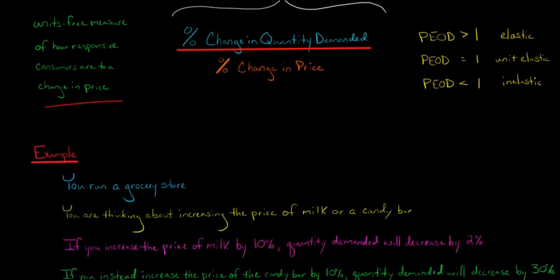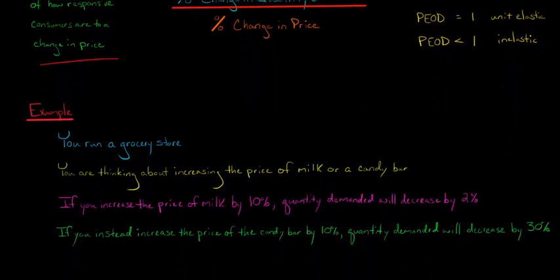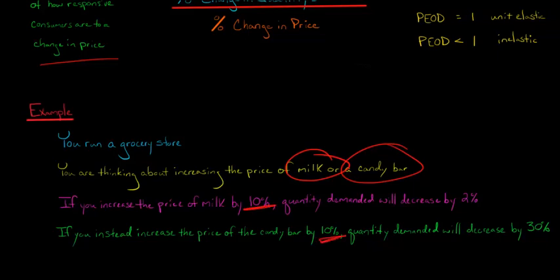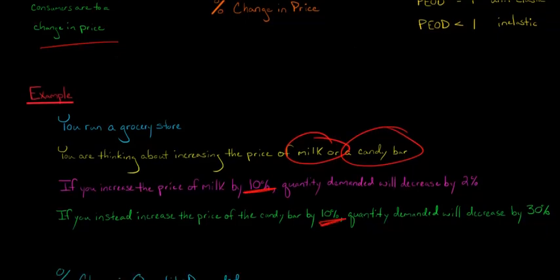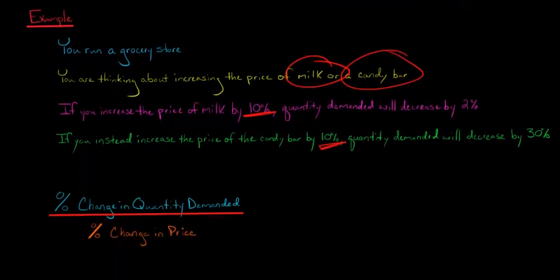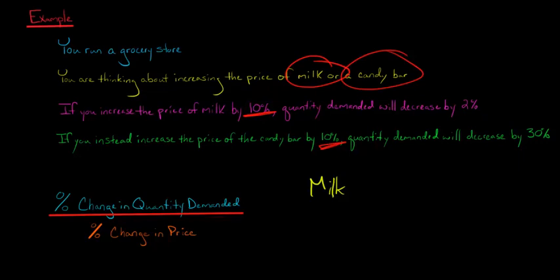Let me give you an example. Let's pretend that you run a grocery store and you're thinking about increasing the price of milk or a candy bar, either one by 10 percent. Let's take milk first. If you increase the price of milk by 10 percent, you predict that quantity demanded would decrease by 2 percent. So we take the percent change in quantity demanded in the numerator and the percent change in price in the denominator. It doesn't matter if it's negative — you ignore the sign.